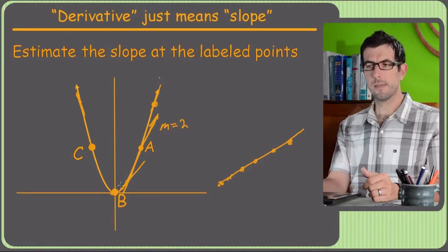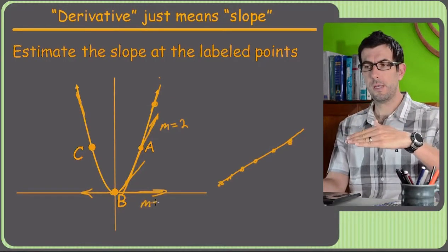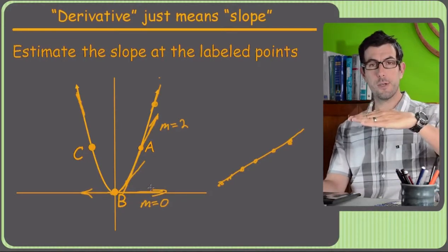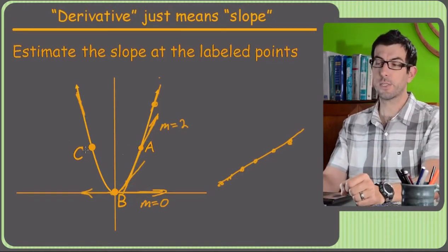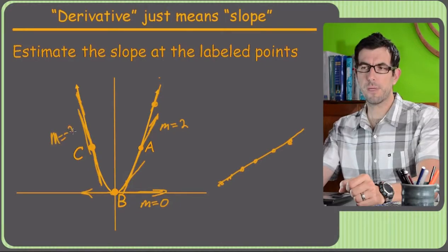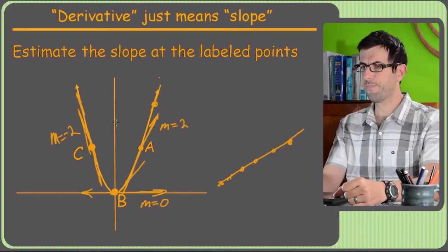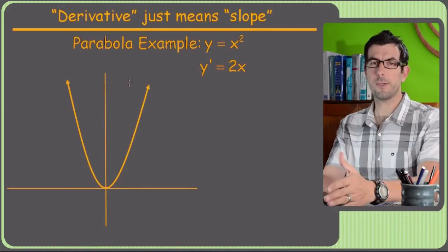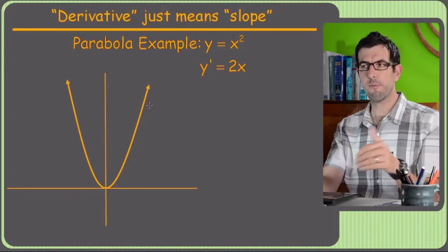Down at point b, that's the vertex of the parabola, so the tangent to that is actually the x-axis. It's horizontal, and the slope of a horizontal line is zero. We really want to get in the habit of thinking about that — horizontal slopes are a slope of zero. That's going to come up again and again throughout calculus. And then point c has a steep tangent line — that's probably a slope of negative two or so. Because remember, down to the right is negative, up to the right is positive.